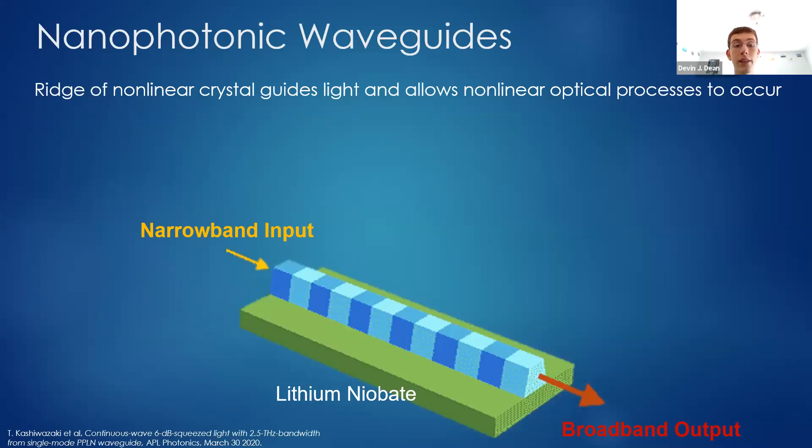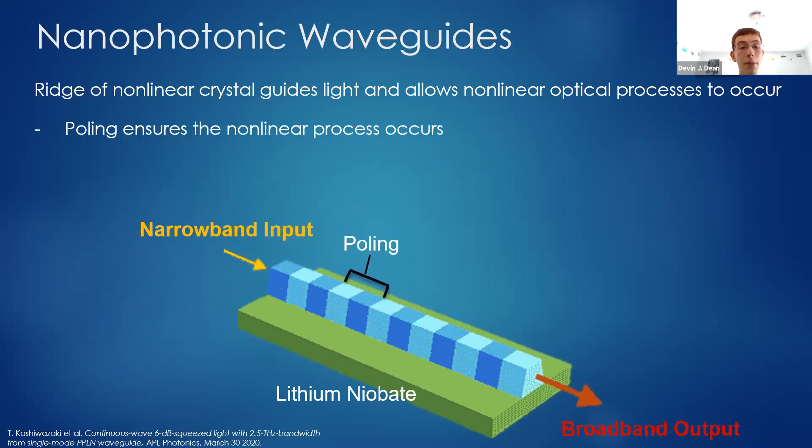This is what a nanophotonic waveguide looks like. You'll notice there's a nonlinear crystal with a ridge that guides light along its length. There's a periodic patterning, referred to as poling, that ensures that a specific nonlinear process occurs. In this case, that nonlinear process could be the broadening of one color into many different colors.